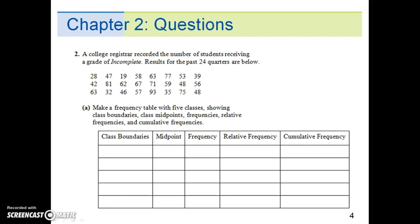Question 2. A college registrar recorded the number of students receiving a grade of incomplete. Results for the past 24 quarters are below. Make a frequency table with 5 classes showing class boundaries, class midpoints, frequencies, relative frequencies, and cumulative frequencies.